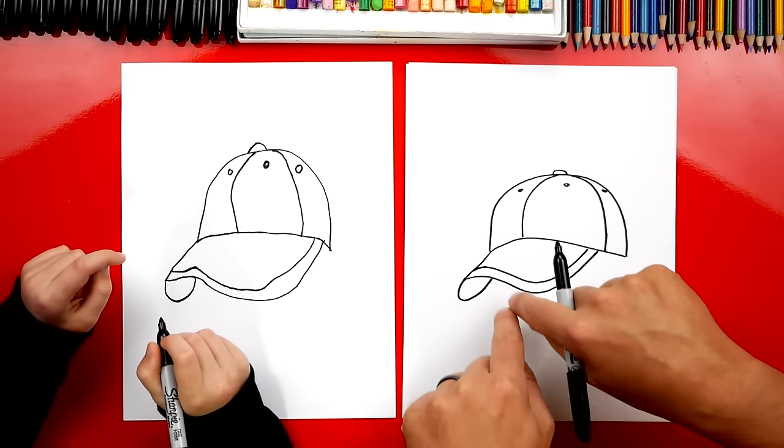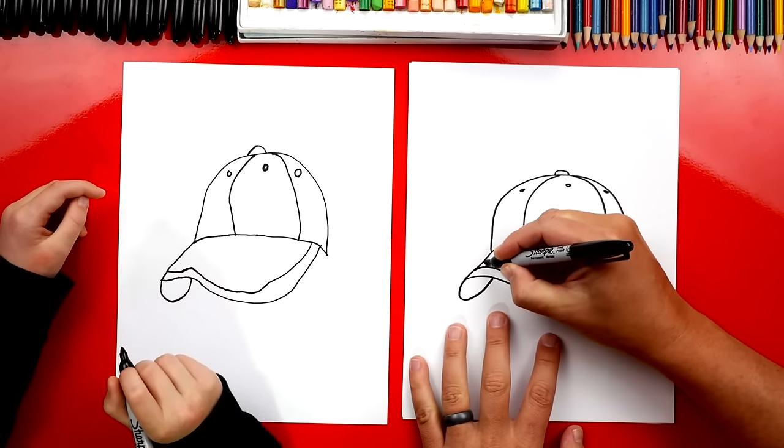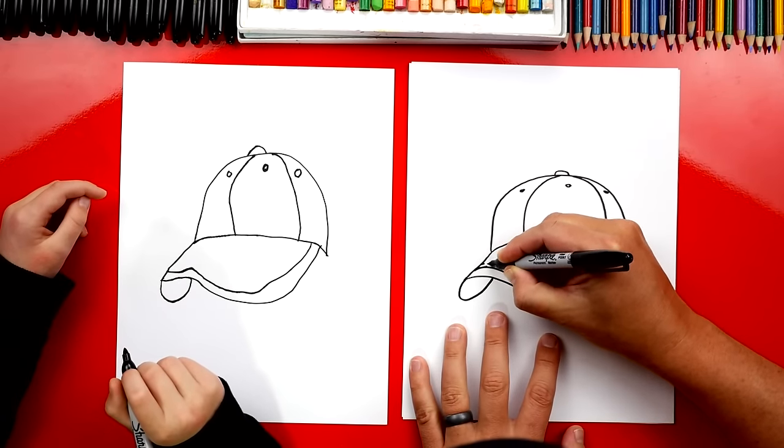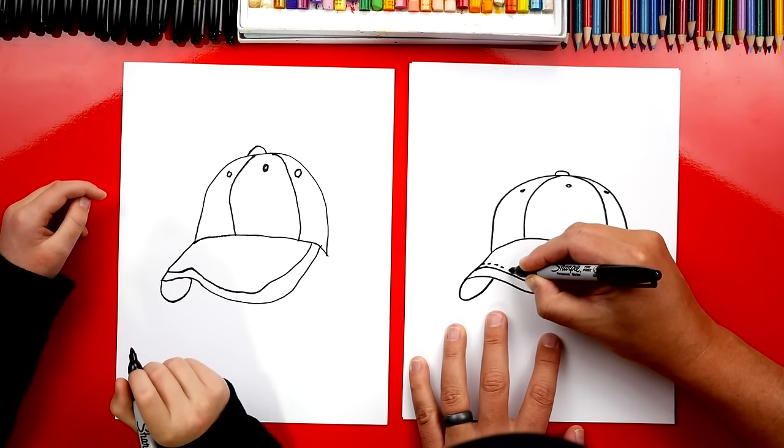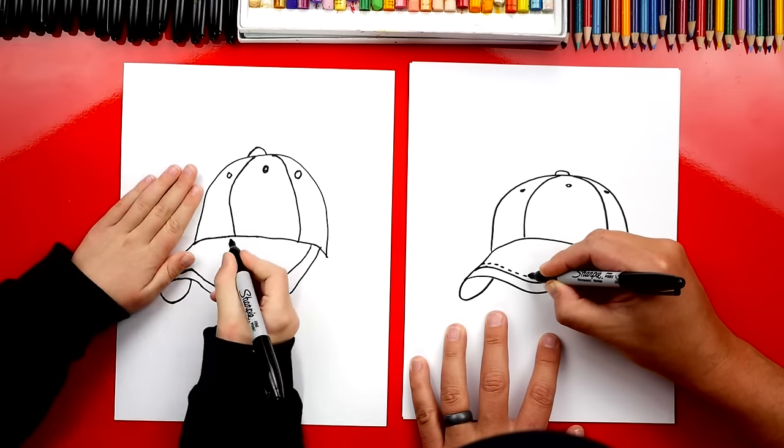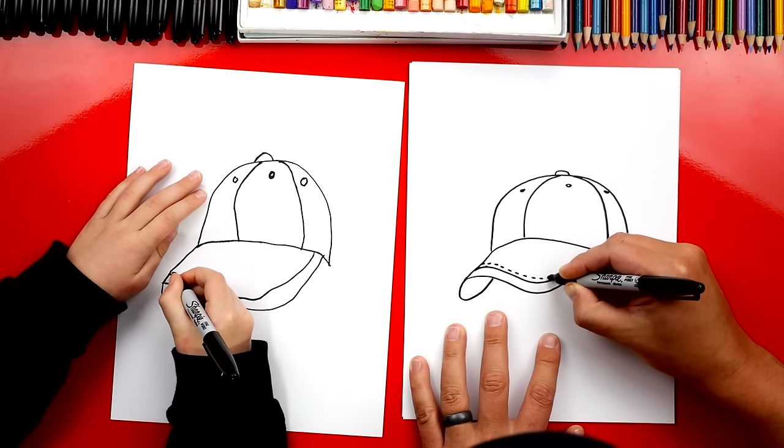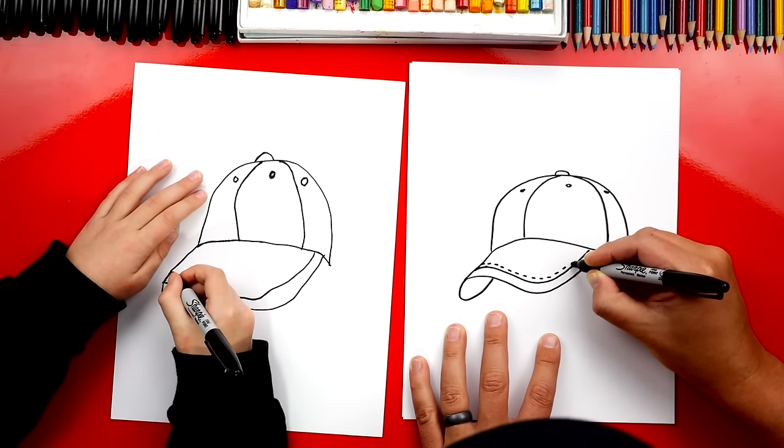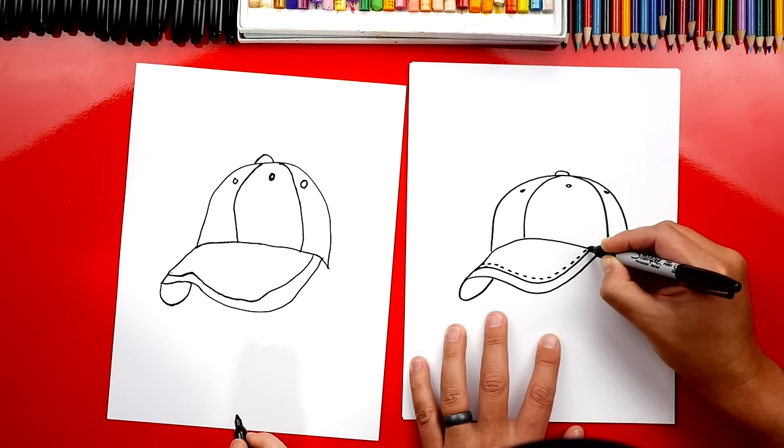Okay, now we're gonna add a stitched line. So we're gonna start right here and we're gonna match that same line, but I'm gonna draw dash lines right next to it. This one's a little tricky. So if it's too tricky, you can leave this one off if you want. But I think you should try.